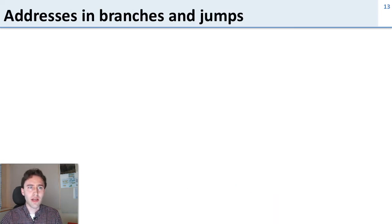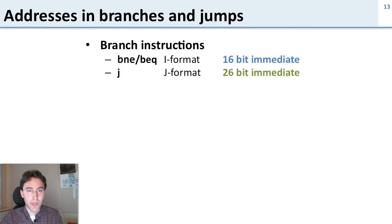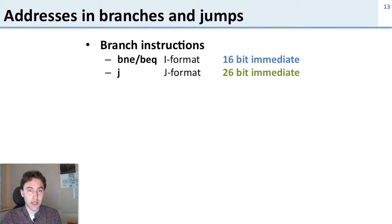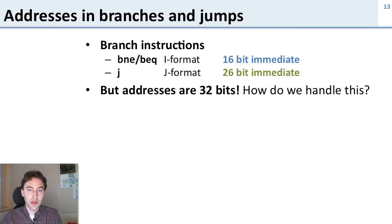Now let's talk about addresses, branches, and jumps. We have two different types: conditional branch instructions, which are I-format — branch not equal and branch equal — and these have 16-bit immediates. Then we have an unconditional jump instruction, J-format, which has a 26-bit immediate. The problem is that addresses are 32 bits, so we need to figure out how to get a 32-bit instruction address using these 16- and 26-bit immediate constants.